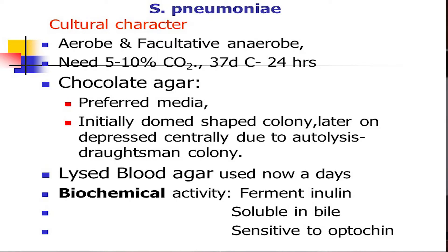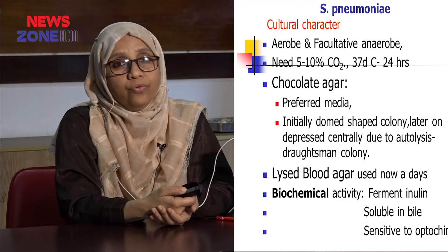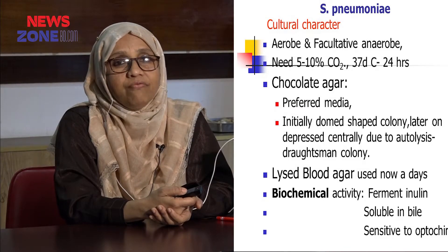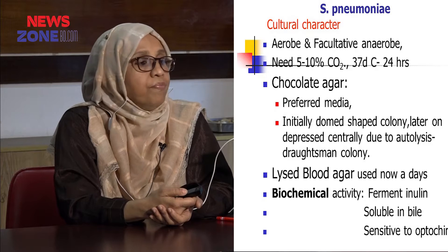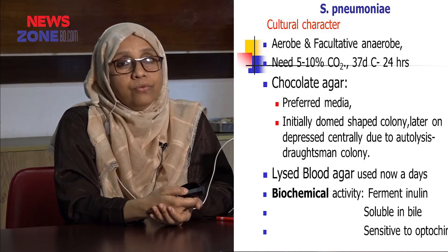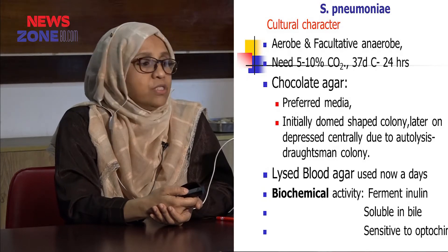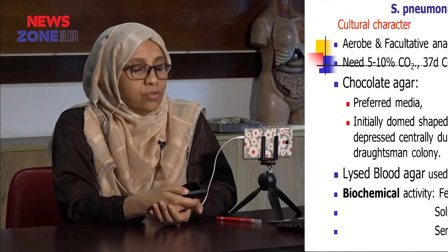These are all aerobic and facultative anaerobes. Streptococcus pneumoniae also, like the Neisseria group, requires an extra 5 to 10% carbon dioxide for its growth. Besides that, we prefer chocolate agar media to cultivate Streptococcus pneumoniae.